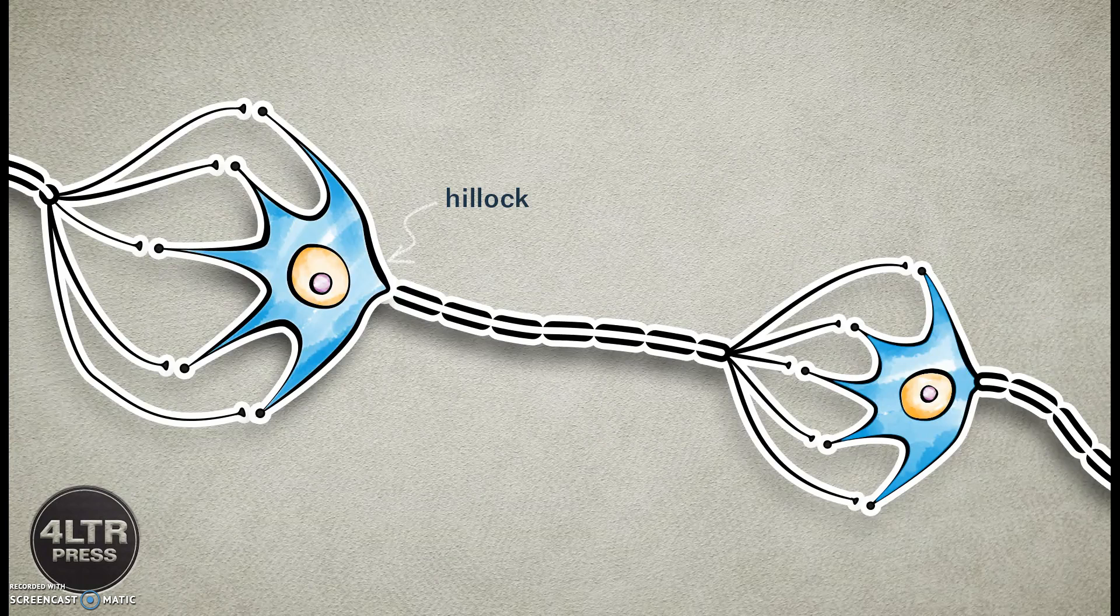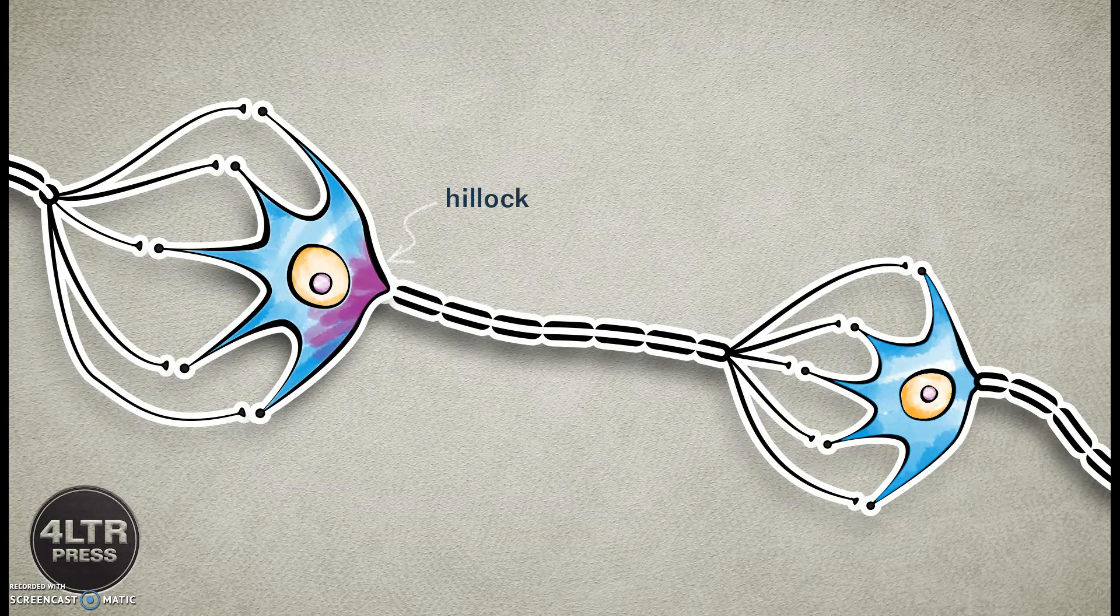On the surface of the cell's body is a small bump called the axon hillock, from which the cell's single axon travels towards other cells. If another excitation occurs at the axon hillock, then an action potential is propagated down the entire length of the axon.